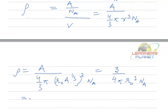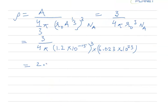So if you substitute the values of pi and r0 and Avogadro number Na, you are going to get a constant. Let us see what that constant is. r0 is 1.2 Fermi, which is 10 to the power minus 15, this is cube, and Na is 6.023 into 10 to the power 23. Solving this will get 2.3 into 10 to the power 17 kg per meter cube as the density of nucleus.